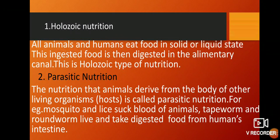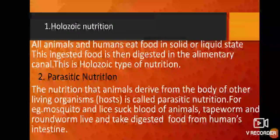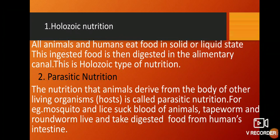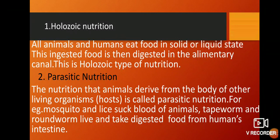What is holozoic nutrition? All animals and humans eat food in solid or liquid state. This ingested food is then digested in the alimentary canal. This is holozoic type of nutrition. And parasitic nutrition — the nutrition that animals derive from the body of other living organisms is called parasitic nutrition. Examples include mosquito and lice, who suck blood of animals. Tapeworm and roundworm live inside our intestine and take digested food from the human intestine.